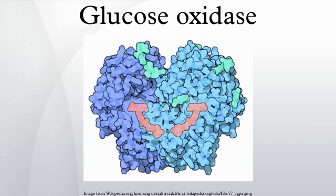Glucose oxidase is also produced by the hypopharyngeal glands of honey bee workers and deposited into honey, where it acts as a natural preservative. GOX at the surface of the honey reduces atmospheric O₂ to hydrogen peroxide, which acts as an antimicrobial barrier.